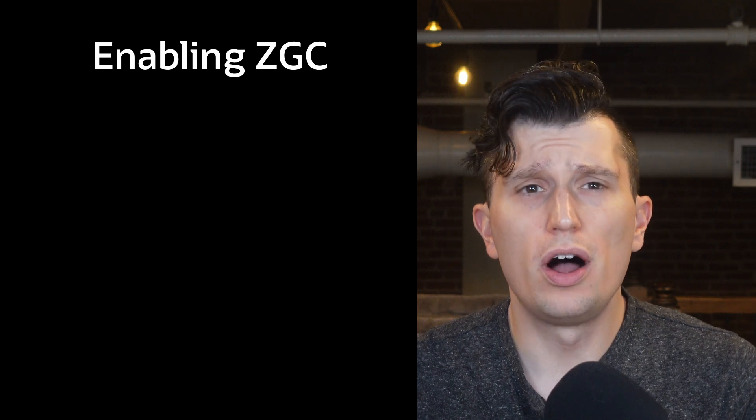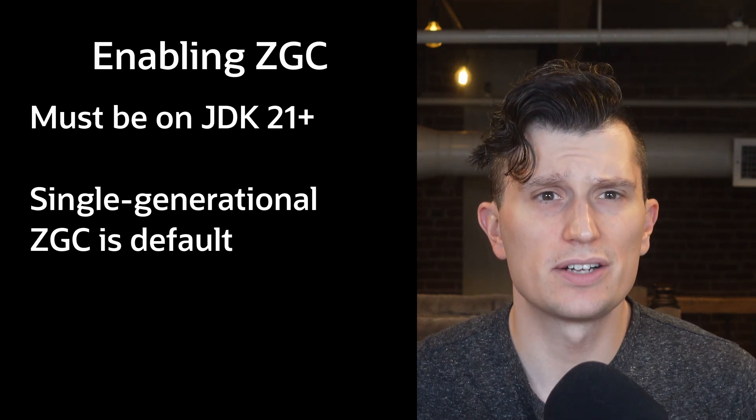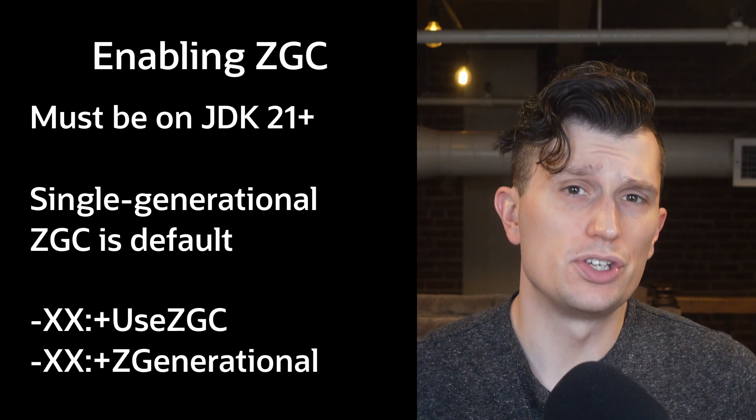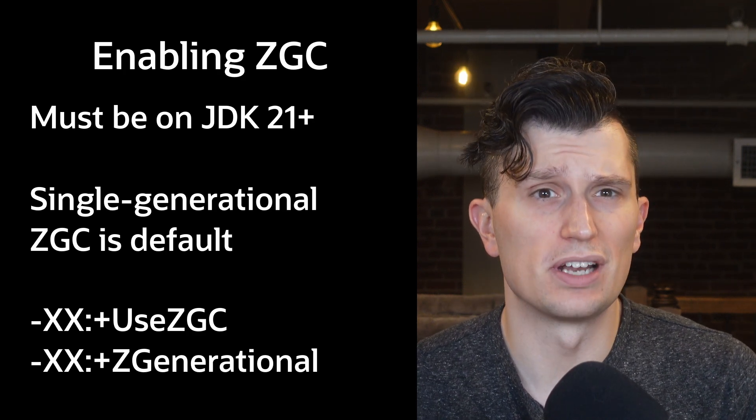As mentioned in the intro, Generational ZGC was added in JDK 21, so you will need to make sure you're on JDK 21 or later. Updating ZGC to be generational was a pretty substantial change, which you can read about in JEP 439, or wait for my Stackwalker episode where I'll go into depth on those changes. Because of this, the ZGC team set up a transition period. Currently, single-generational ZGC is the default when using the Z garbage collector. To use Generational ZGC, you need to pass both -XX:+UseZGC and -XX:+ZGenerational. The plan is to make Generational ZGC the default and eventually the only implementation of ZGC, with single-generational ZGC being deprecated and then removed, though the exact timeline has not been set in stone yet.